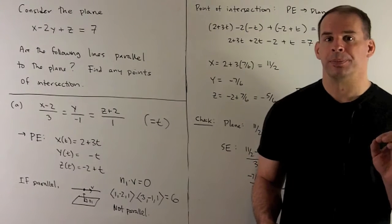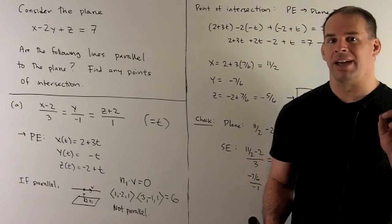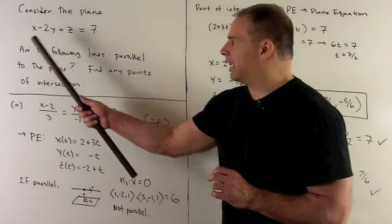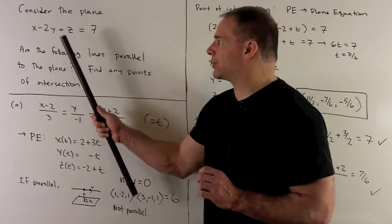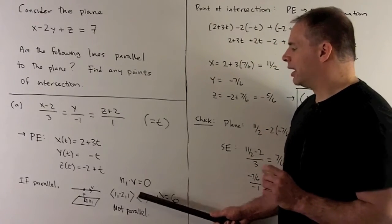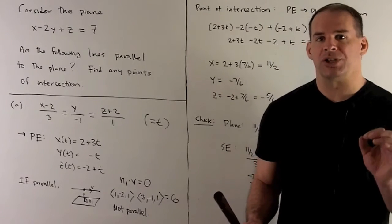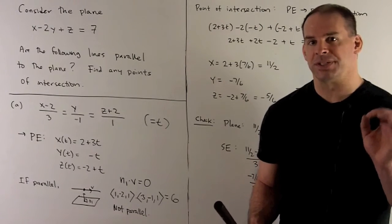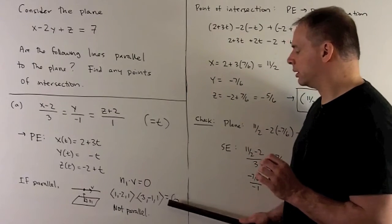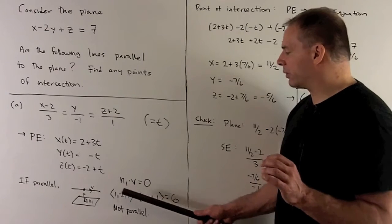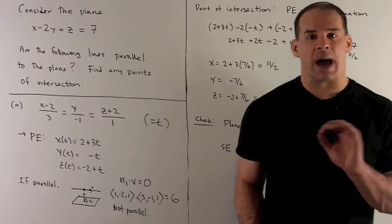To get n1, for our plane we just peel the coefficients off of x, y, and z, giving us the normal direction 1, minus 2, 1. For the direction of our line, v, we go to the parametric equations and peel off the coefficients of t, giving us 3, minus 1, 1. Taking the dot product gives us 3 plus 2 plus 1, which is 6. So our line and our plane are not parallel.